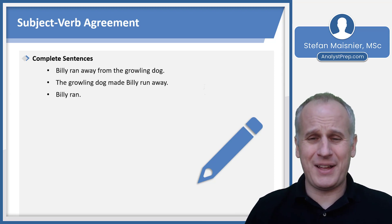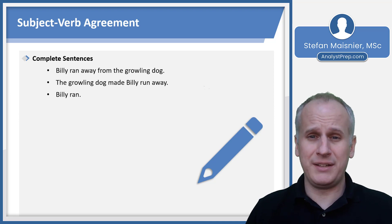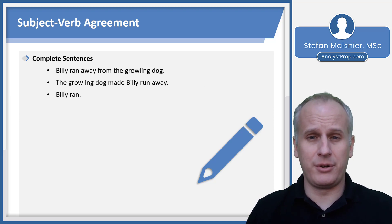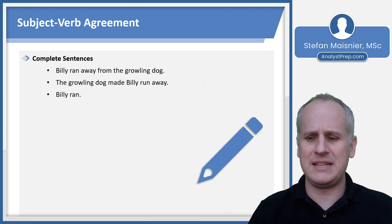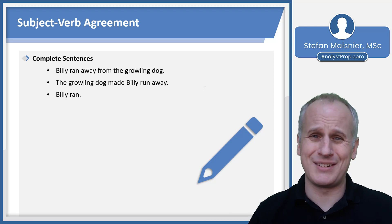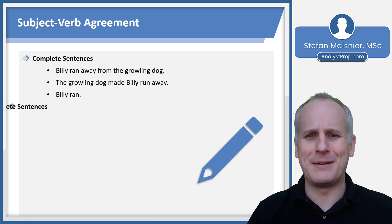We can also have as short a complete sentence as 'Billy ran.' We don't need to know what Billy ran from yet — we could learn that in the next sentence. We've got a subject and a verb, so you don't necessarily need an object. 'Billy ran' is a complete sentence, although it's much shorter than what you're likely to encounter on the exam.